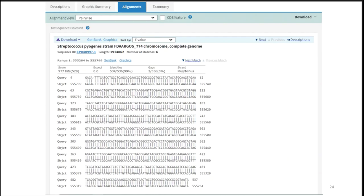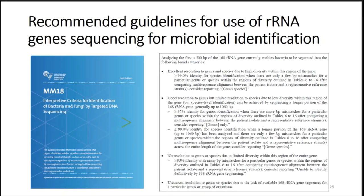CLSI MM18 guidelines give us guidance on when we have sufficient match to call identification to genus and species level. To call to genus and species level, you need greater than or equal to 99.0% identity. If it's below that threshold, you can call only to genus level; if it's even lower, you may not be able to assign even a genus name.